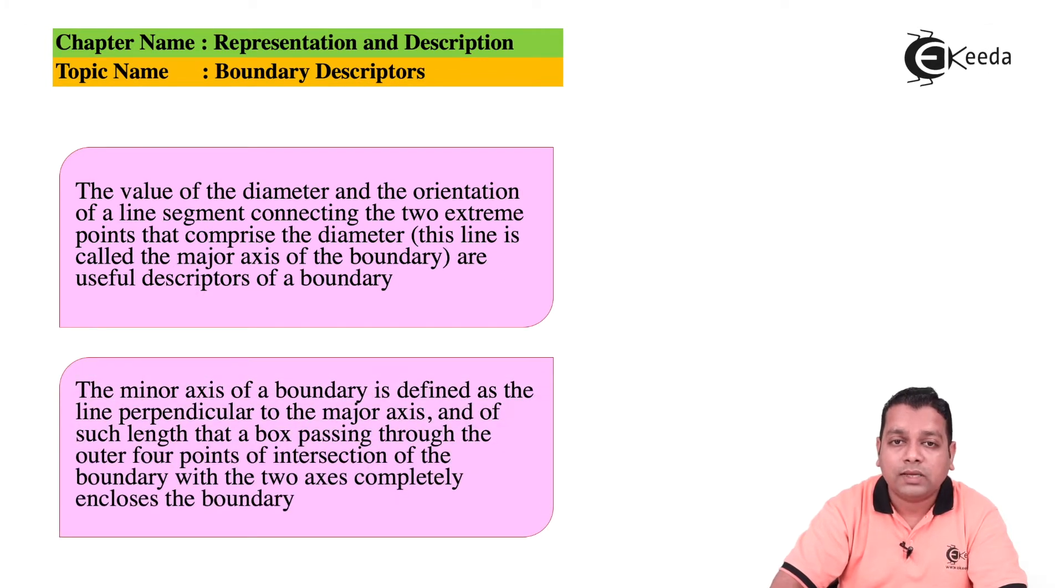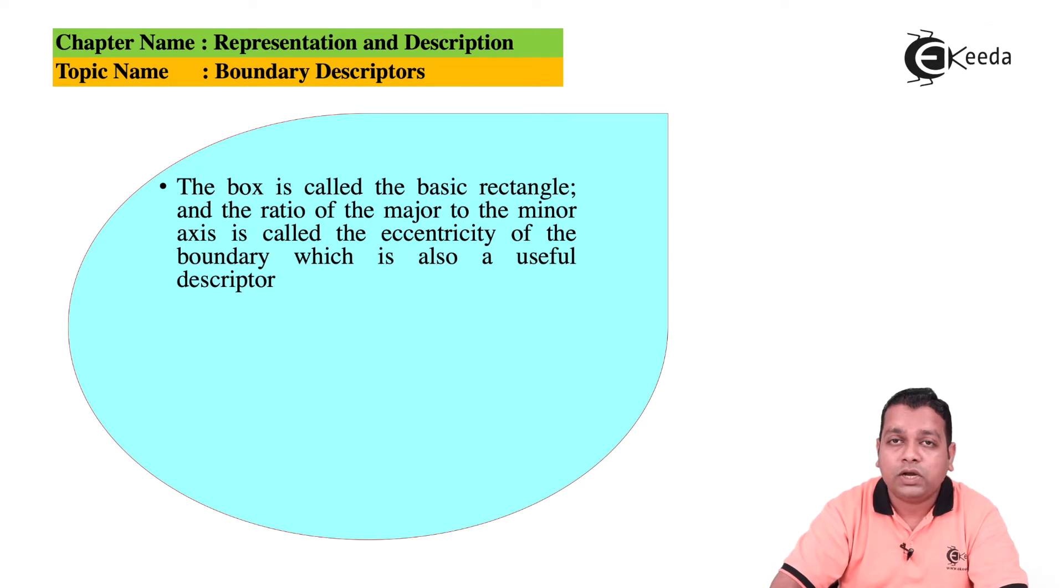The minor axis of the boundary is defined as the line perpendicular to the major axis and of such length that the box passing through the outer four points of the intersection of the boundary with the two axes completely encloses the boundary. The box is called the basic rectangle and the ratio of the major to the minor axis is actually called eccentricity of the boundary, which is also a useful descriptor.